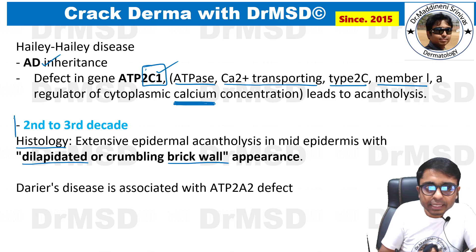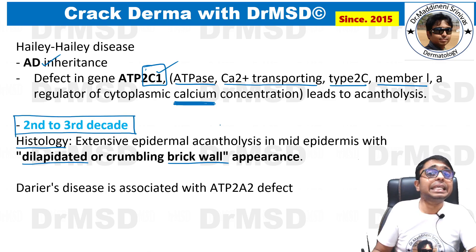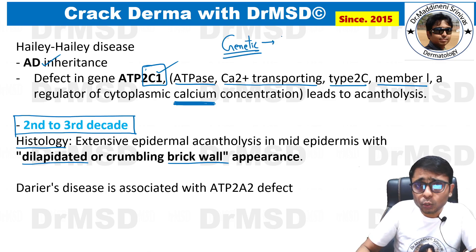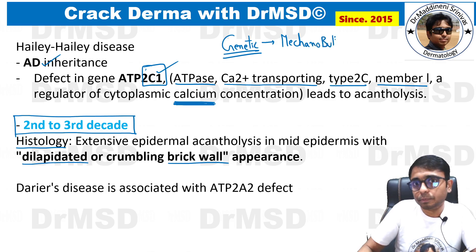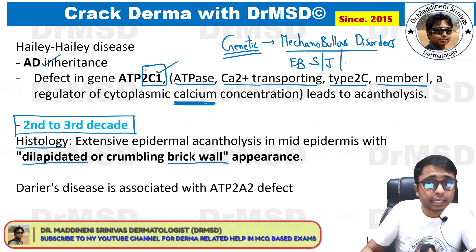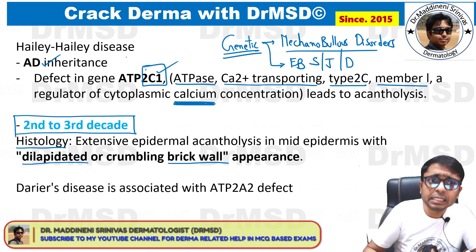In the vesiculobullous disorders — specifically in the genetically acquired disorders category — there is an important group called mechanobullous disorders. These include epidermolysis bullosa simplex, epidermolysis bullosa junctional, and epidermolysis bullosa dystrophica. All of these are genetic, just like Hailey-Hailey disease.